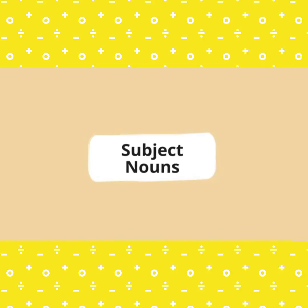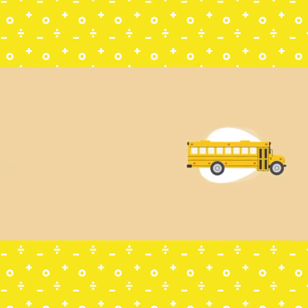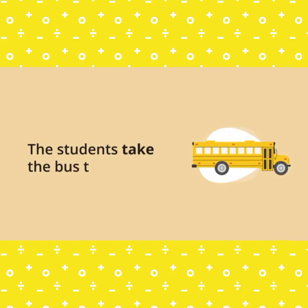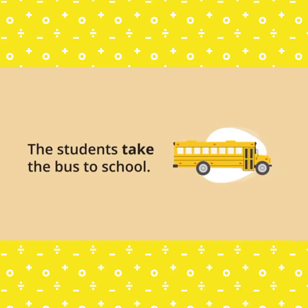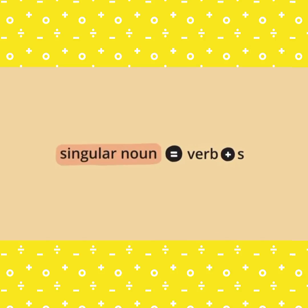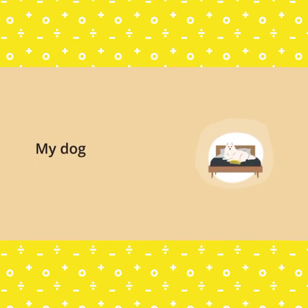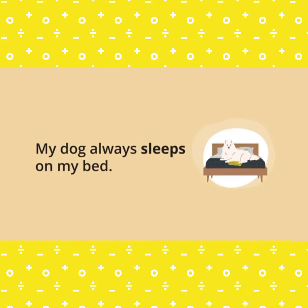We use the base verb when the subject noun is plural. For example: The students take the bus to school. My parents drink coffee every morning. We use verb plus S when the subject noun is singular. For example: The student walks to school every day. My dog always sleeps on my bed.